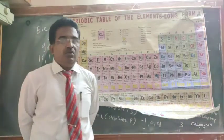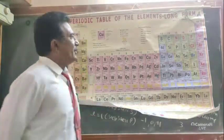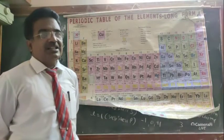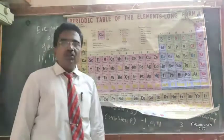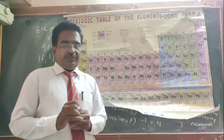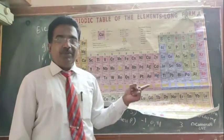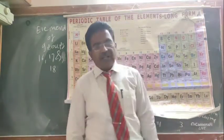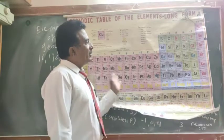Our topic covers groups 16, 17, and 18: the oxygen family, the halogen family, and the noble gas elements. Group 17 elements are non-metals and the most electronegative elements. Chlorine and other halogens are among the most electronegative elements in the periodic table.